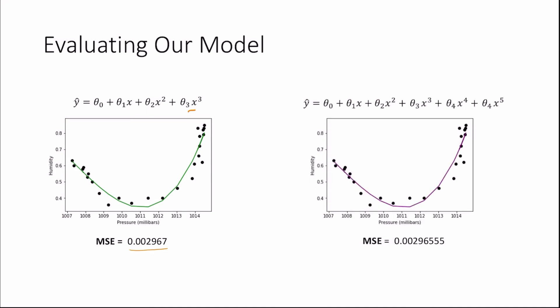So as we add more and more variables to our model, our mean squared error decreases. We might be tempted to think that surely we should just add as many variables as we can, x to the 6, x to the 7. And surely this will just produce the lowest mean squared error and we should just use that model for making predictions for humidity.